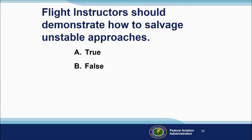Flight instructors should not demonstrate how to salvage unstable approaches — this practice, though common, is usually not recommended. The answer is false. If CFIs always take over and stabilize the approach or complete the landing, students don't get to make the go-around decision, nor do they get practice in go-arounds. As certificated pilots, they may be less inclined to exercise the go-around option, and that has contributed to a significant number of approach and landing accidents.